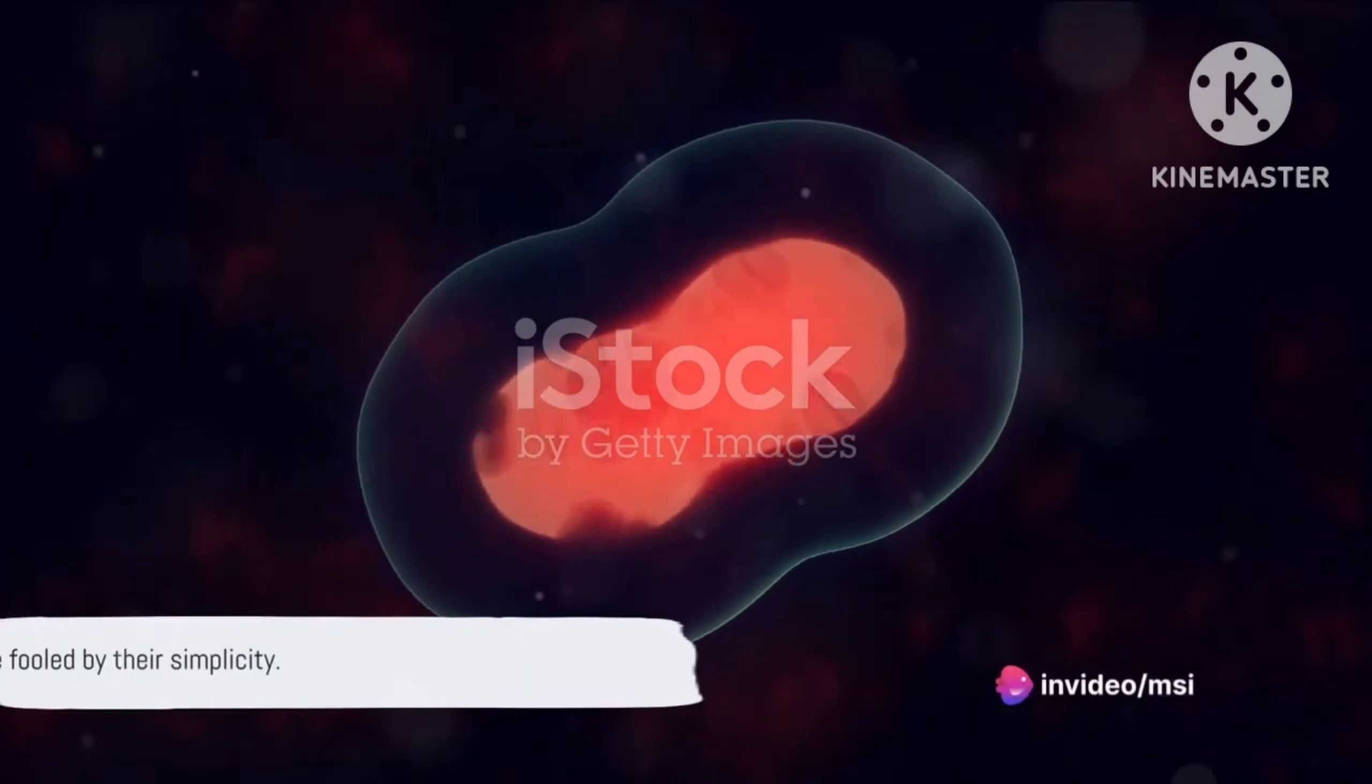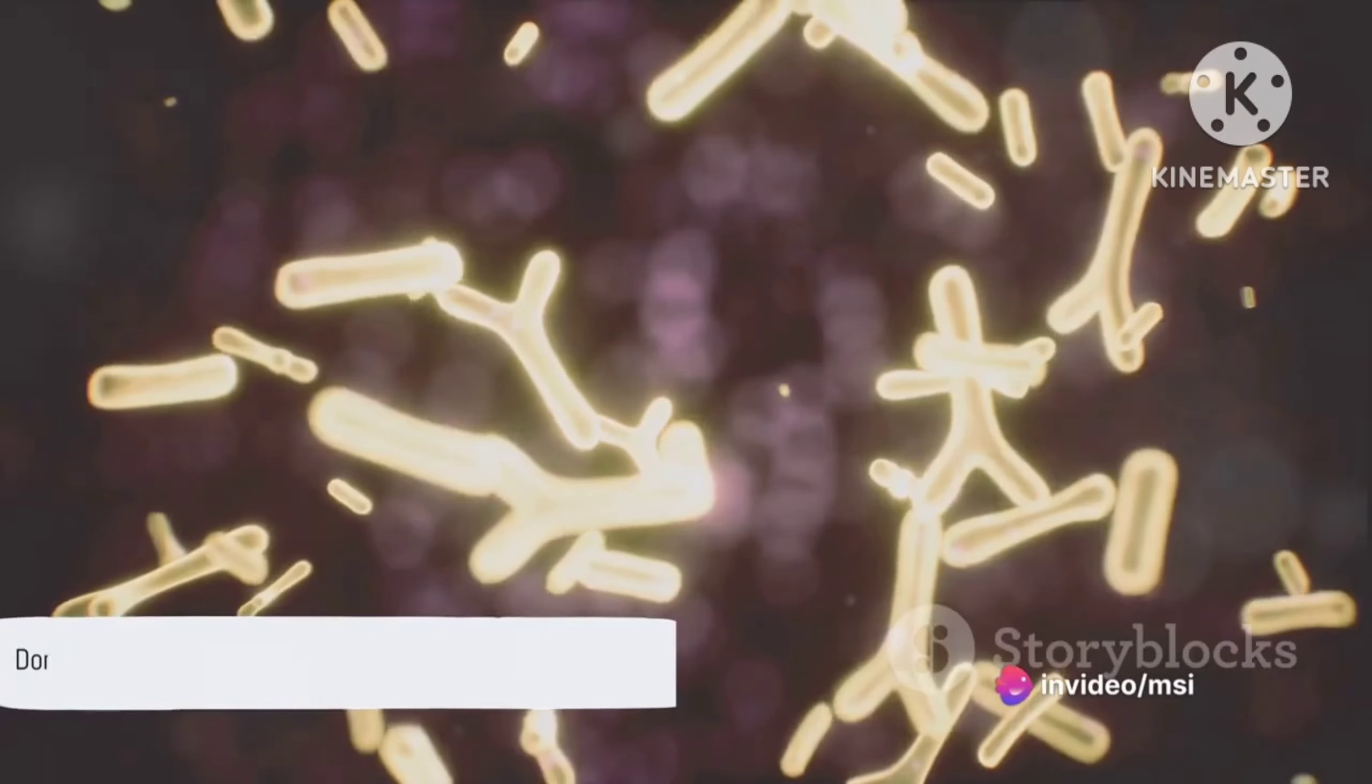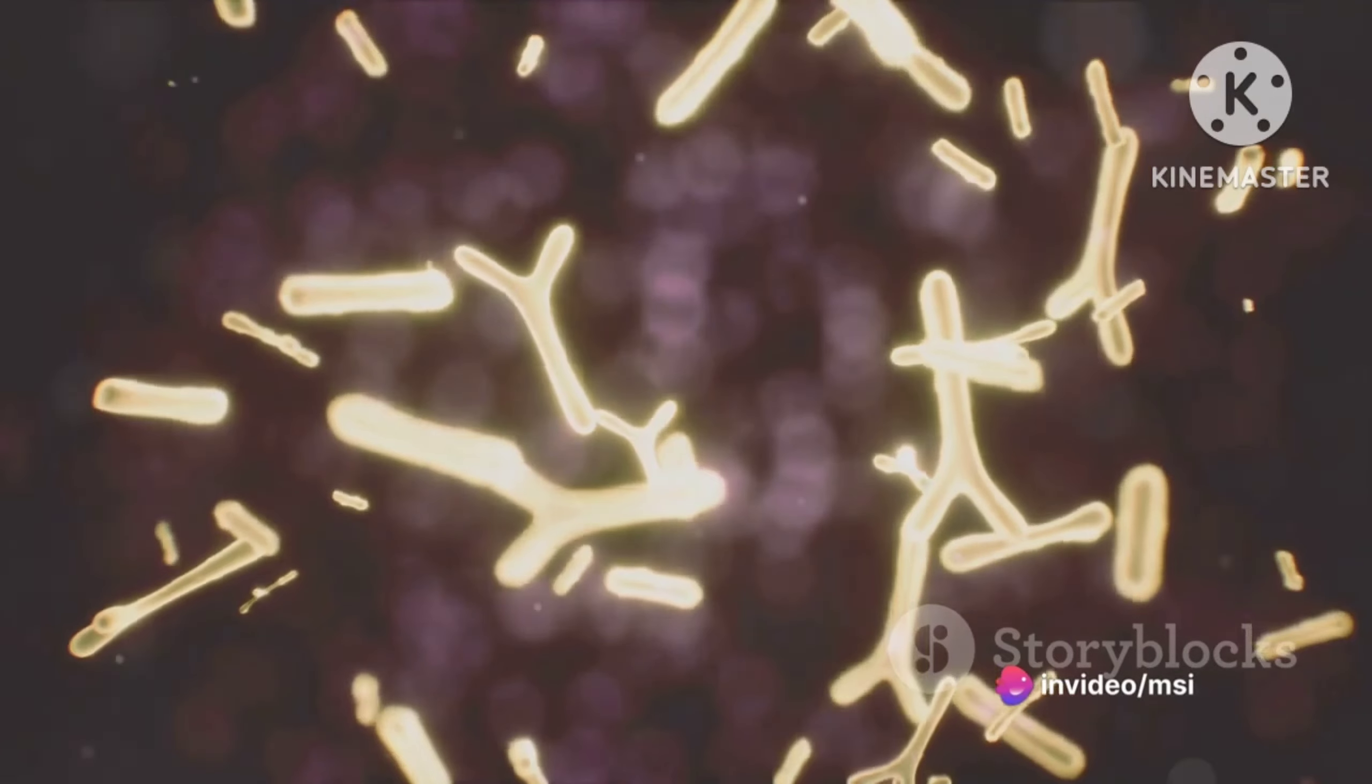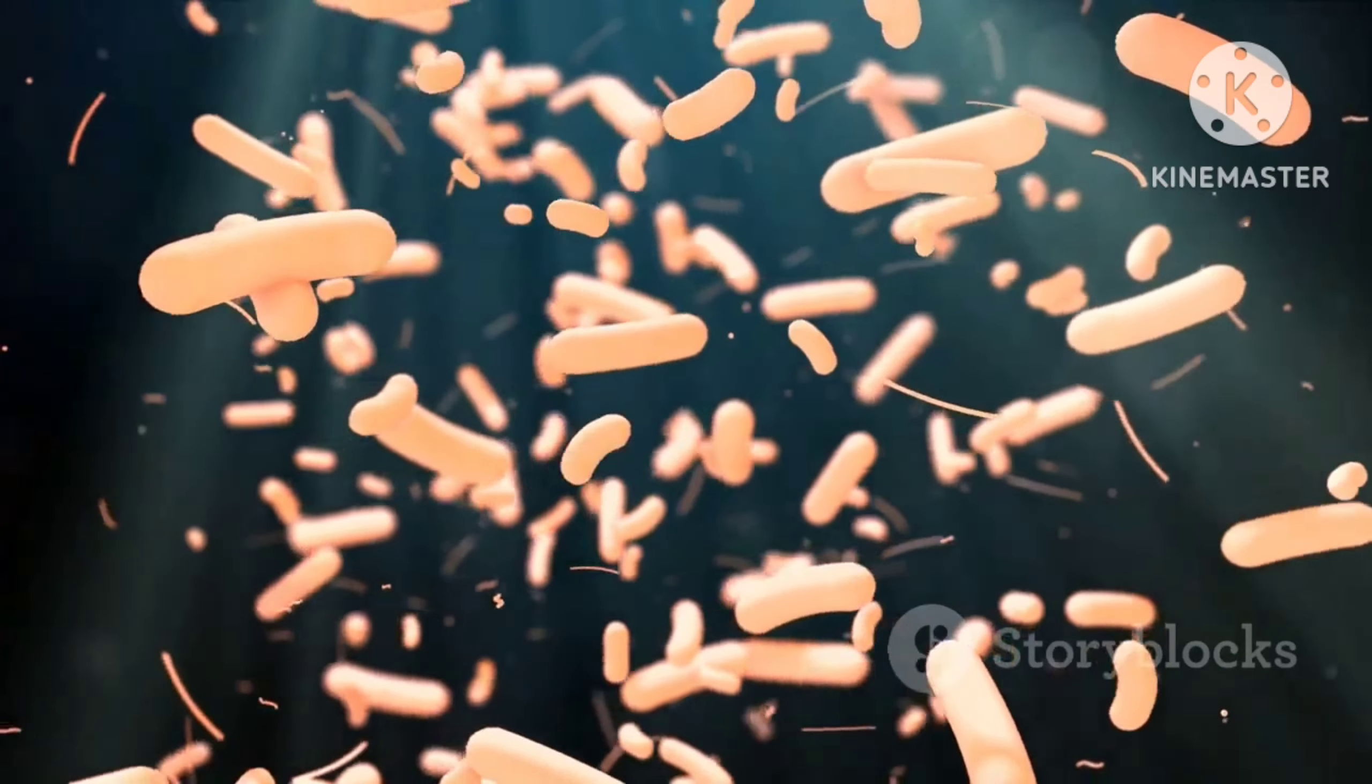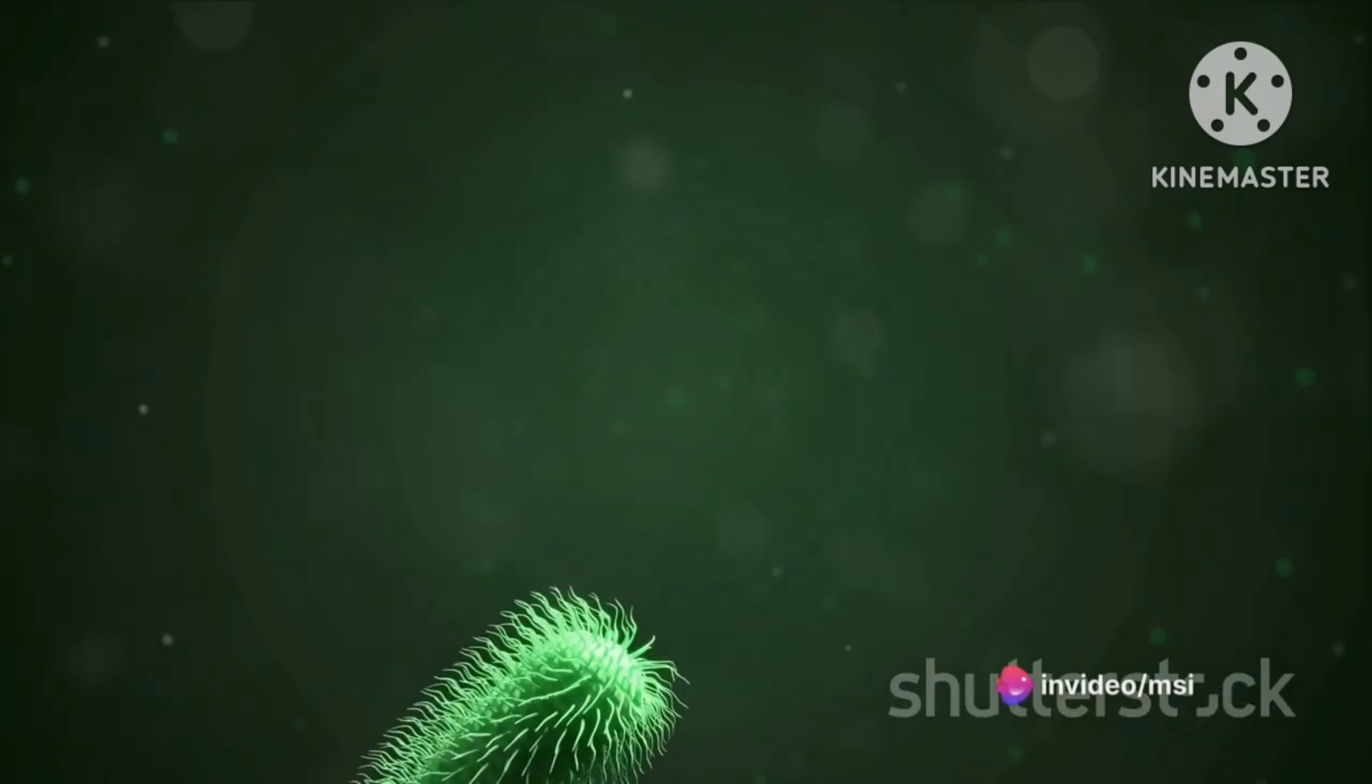But don't be fooled by their simplicity. Prokaryotes still come equipped with essential organelles, like ribosomes, the protein-building factories, a cell membrane for regulation, and in some cases, flagella for movement and capsules for protection.